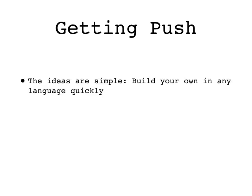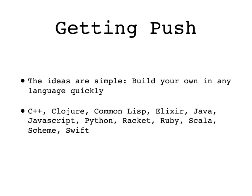How do you get Push? The ideas behind the language are simple, and if you're a programmer writing an evolutionary computing system, you may just want to write a simple version of your own as part of your system. An interpreter with enough instructions to be useful can probably be written in a few hundred lines of code in any reasonable high-level language. Push and PushGP systems have been developed in a variety of host languages, and some of these are publicly available. See pushlanguage.org for more on these.